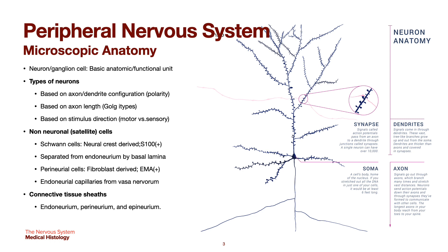Next are the non-neuronal satellite cells. We have your Schwann cells, your perineural cells, and your endoneural capillaries from your vasa nervorum. We also have connective tissue sheaths: the endoneurium, which is very delicate connective tissue; the perineurium, which is multi-layered concentric cells; and the epineurium, made up of dense fibrous connective tissue, enveloping your main nerve trunk consisting of several bundles. It merges with your surrounding adipose tissue and is continuous with your dura mater.